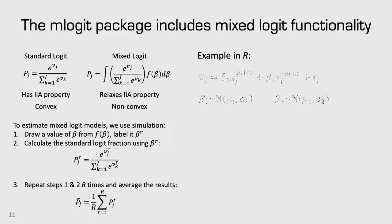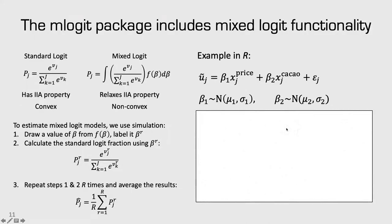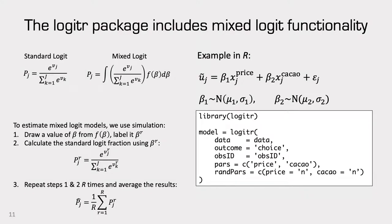In R, let's look at a chocolate example with price and percentage cacao. Instead of a homogeneous model, we assume beta 1 and beta 2 are both normally distributed, so we estimate four parameters: a mean and standard deviation for beta 1, and a mean and standard deviation for beta 2. To implement this using the logitr R package, the only addition is a rand_pars argument inside the logitr function call, which specifies which parameters to model as random. To model price and cacao as normally distributed, set price equal to 'n' and cacao equal to 'n'. Log normal distributions are also supported using 'ln'.